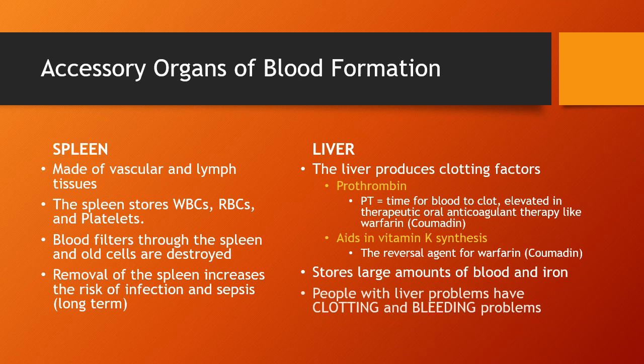The spleen protects us from having old cells floating through the body that could break open and flood our system with excess bilirubin, potassium, or other debris. It also recycles some of those pieces to be used again in the formation of new cells. If the person has a problem with their spleen — if it's injured or enlarged and needs to be removed — the removal of that much vascular and lymphatic tissue puts them at a lifelong risk of infection and sepsis.